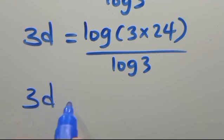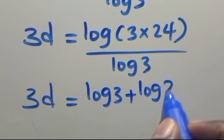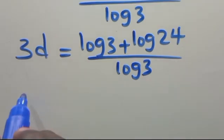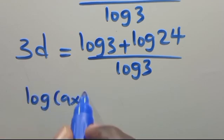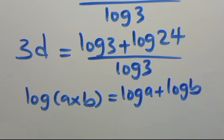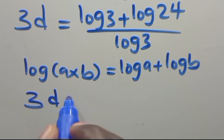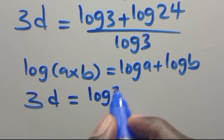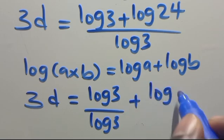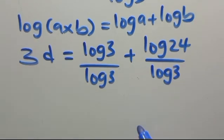Then log of 3 times 24 over log 3 becomes log 3 plus log 24, all over log 3. This is because when we have log of A times B in parentheses, this equals log A plus log B. So dividing through by log 3 gives us log 3 over log 3 plus log 24 over log 3.